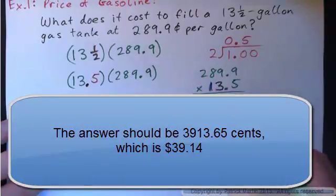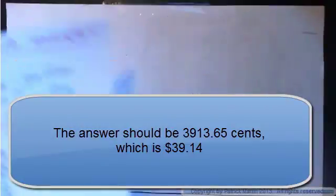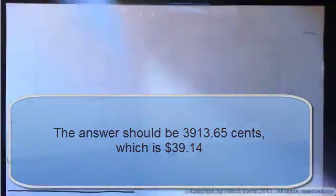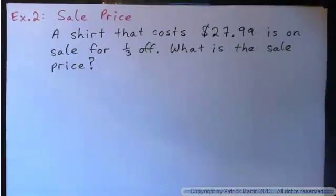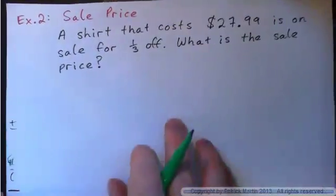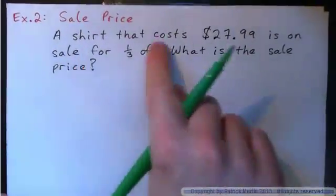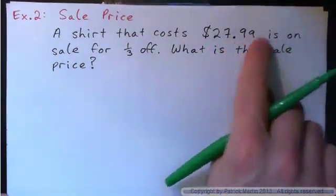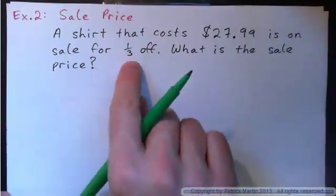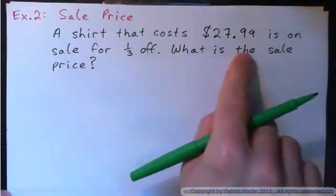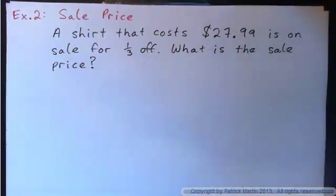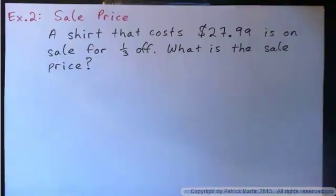Five. Nine and six. Example 2 — sale price. A shirt that costs $27.99 is on sale for a third off. What is the sale price? By all means press pause and just have a stab at that. See if you can get the answer.